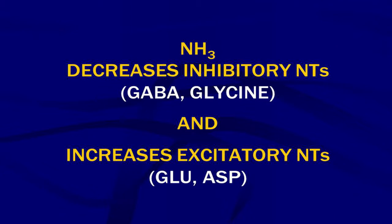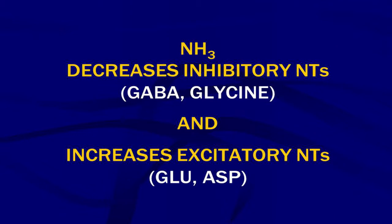When patients can't metabolize ammonia, it becomes an issue with neurotransmitters. NH3 ammonia decreases inhibitory neurotransmitters such as GABA and glycine, and increases excitatory neurotransmitters such as glutamic acid and aspartic acid — glutamate or aspartate.